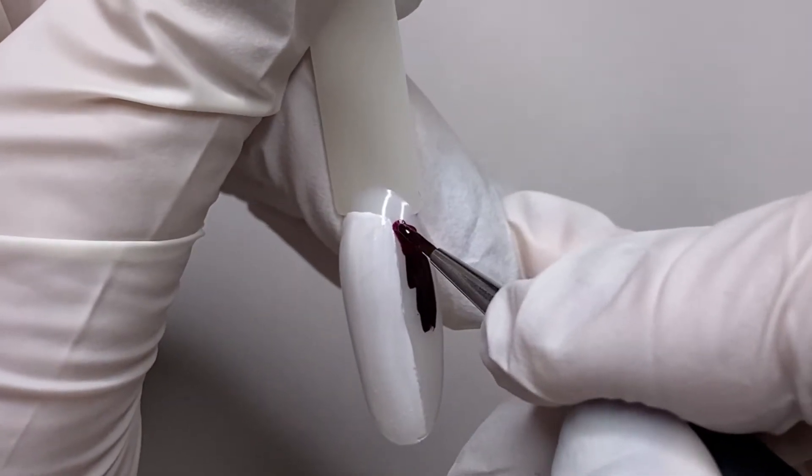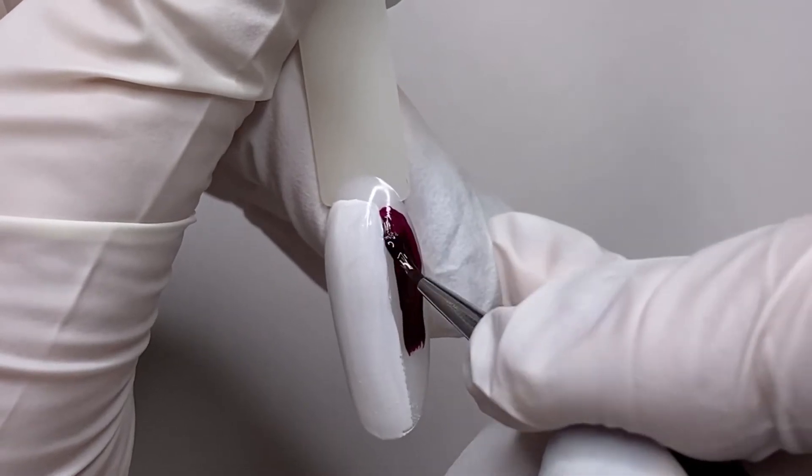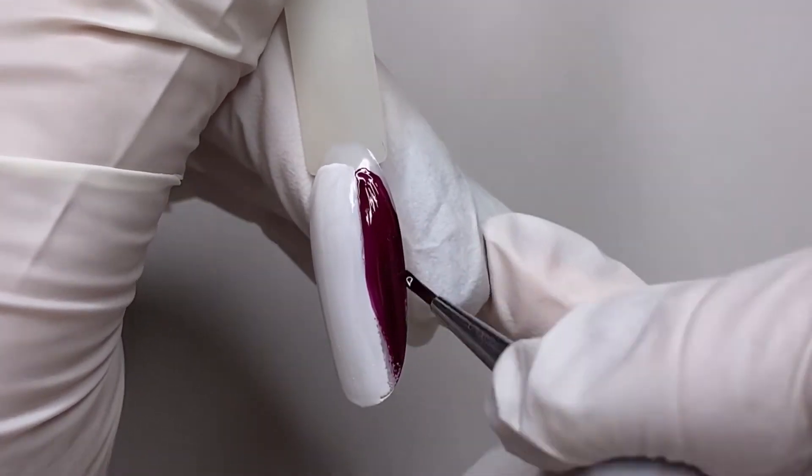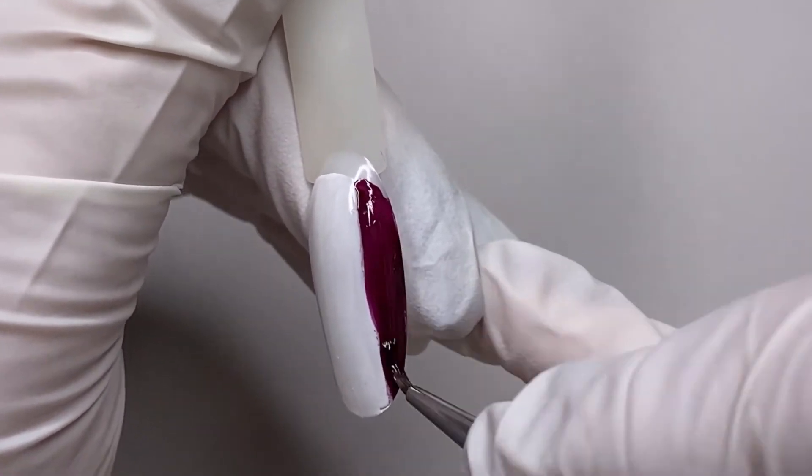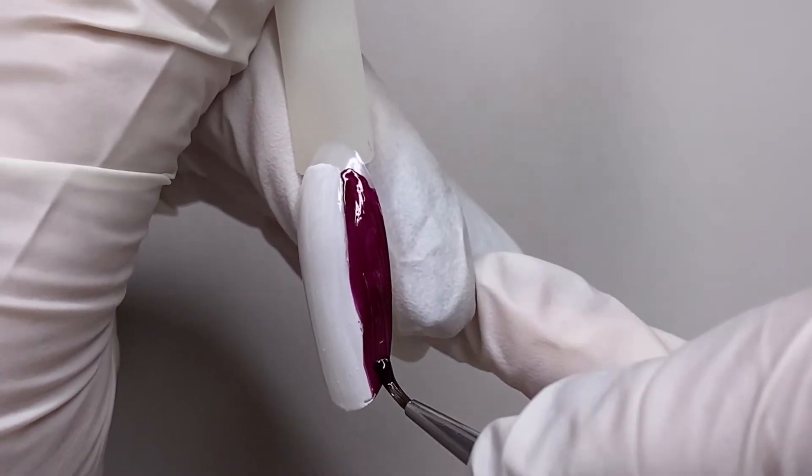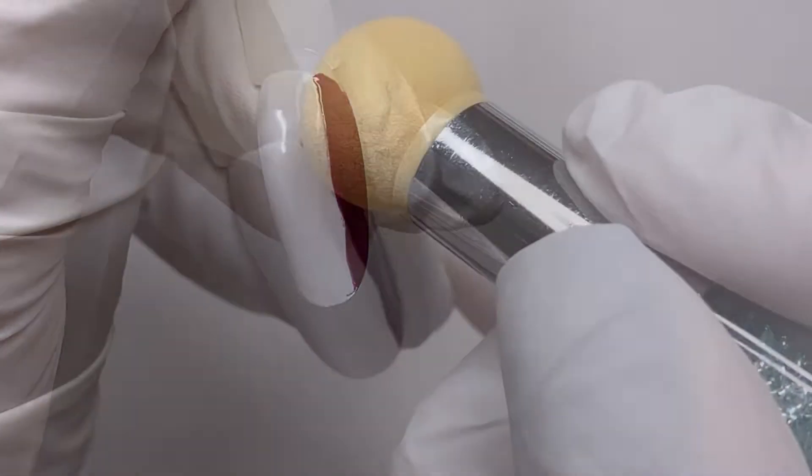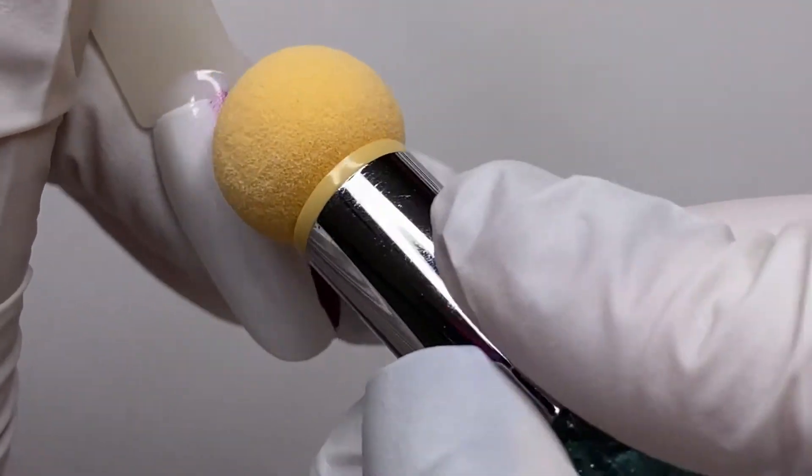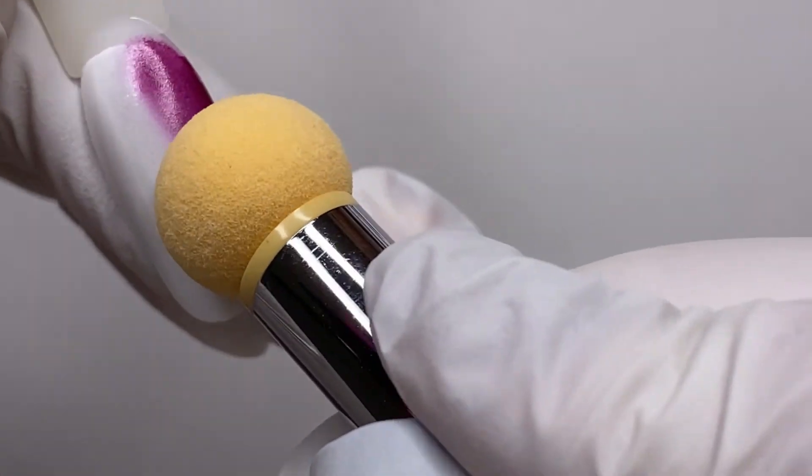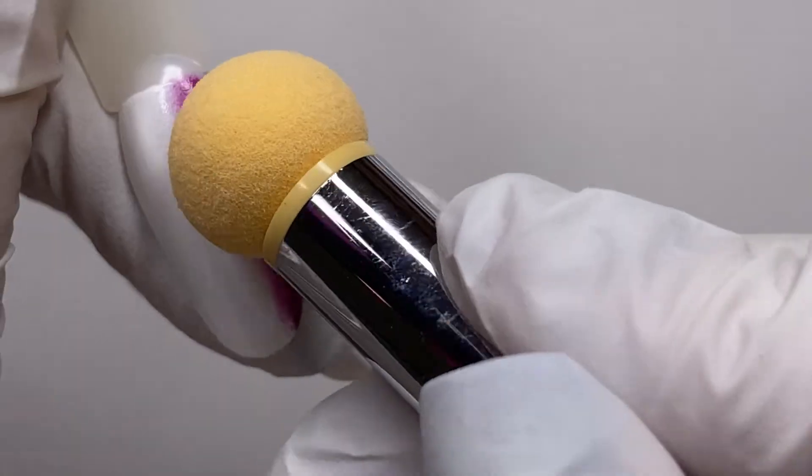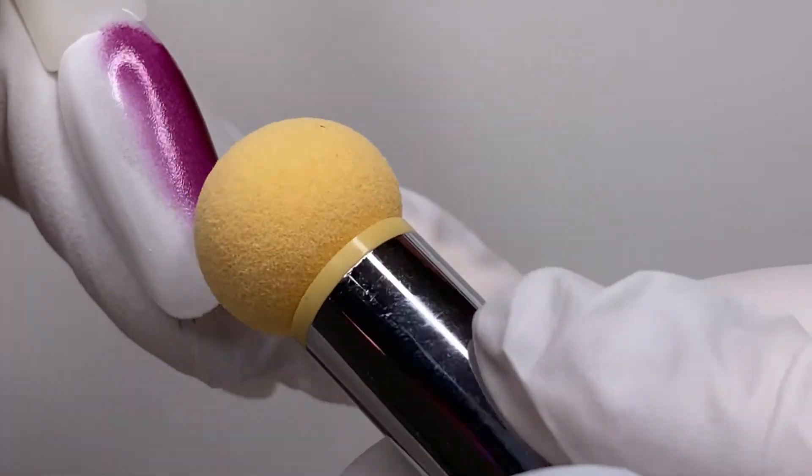For this reason, here is very important - the proportion of how you apply the product on the nail blade. You can see two parts is white and one part is the darker color. Keep this proportion and using a sponge I'm starting to blend.